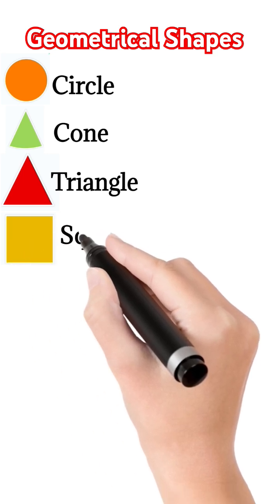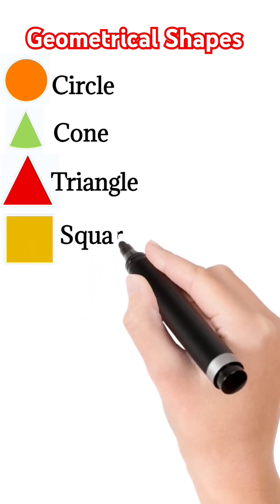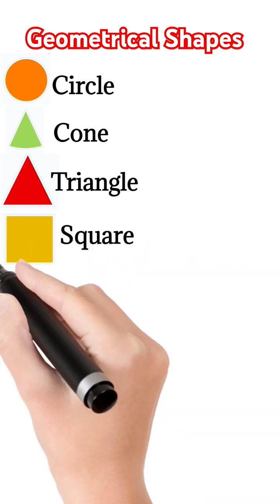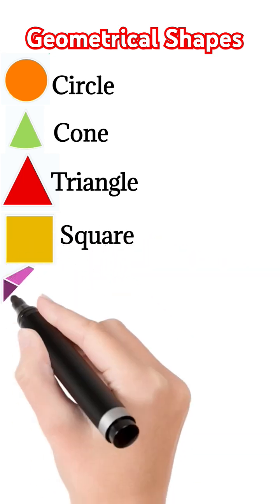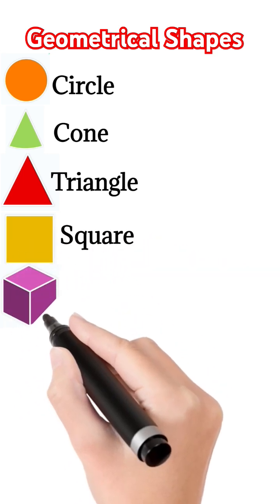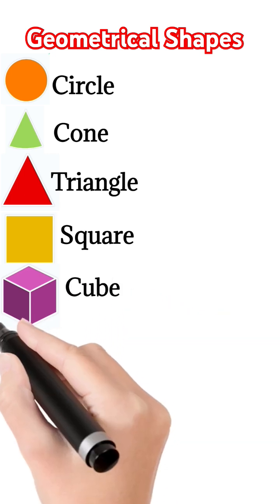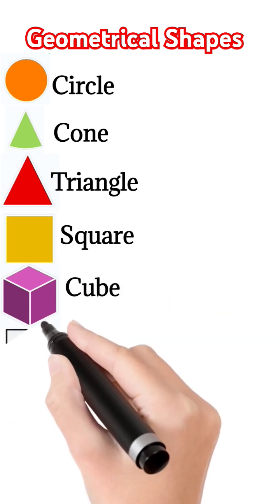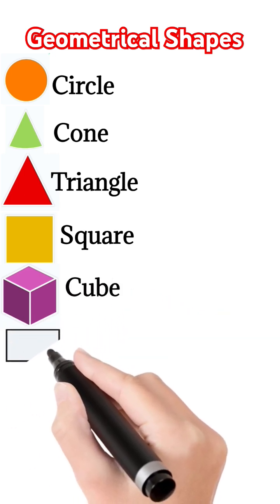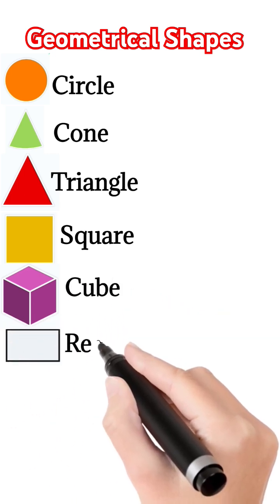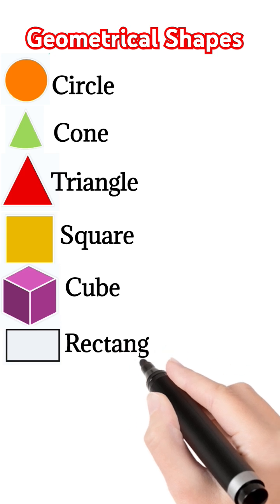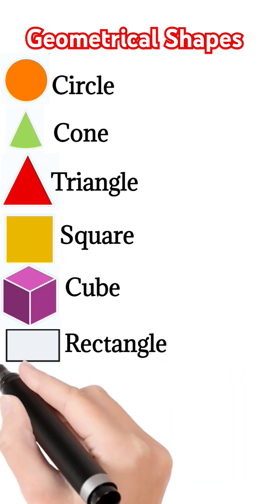The next one is square, square. The next one is cube, c-u-b-e, cube. The next one is rectangle, rectangle.